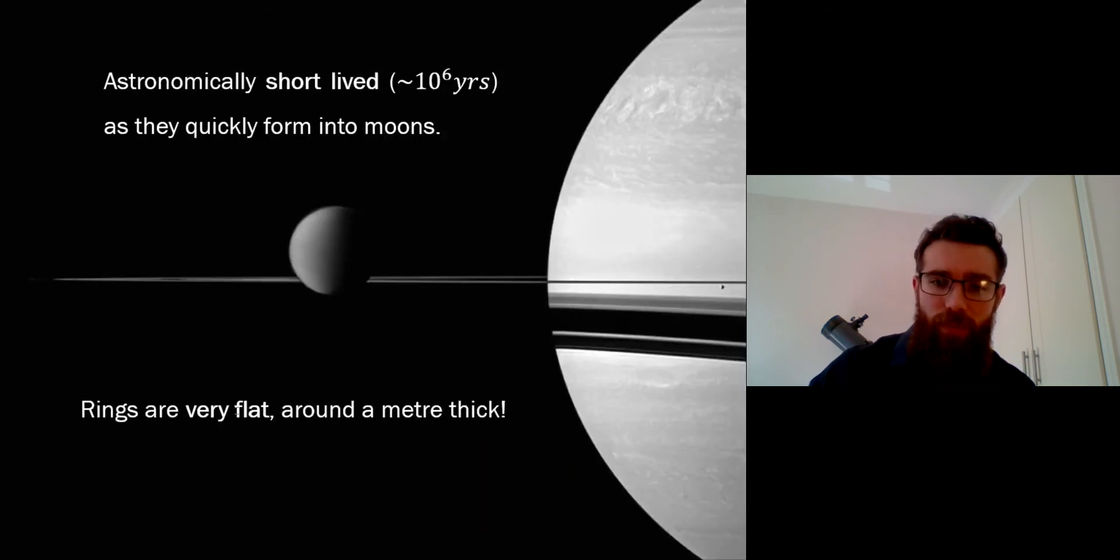Now something else quite curious about these planetary rings, specifically with Saturn as well, is they're very, very thin. They're actually only on the order of a meter thick, which means that they're almost just one layer of particles. Remember the size of the particles - they're on the order of that meter size the biggest ones. So if the rings are only a meter thick there's only really one layer of particles there in some places.